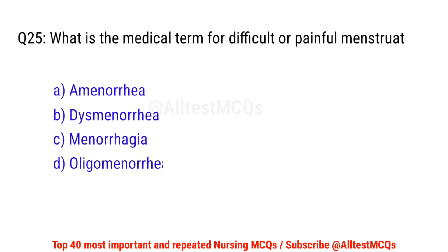Question No. 25: What is the medical term for difficult or painful menstruation? The correct option is B: Dysmenorrhea.